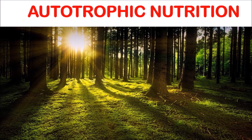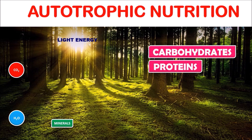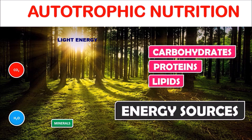Some organisms, by using light as an energy source and by acquiring gases like carbon dioxide, water, and minerals from soil, synthesize complex substances such as carbohydrates, proteins, and lipids. For example, plants. They serve as an energy source in the form of food for all living organisms, directly or indirectly. This mode of nutrition is known as autotrophic nutrition.